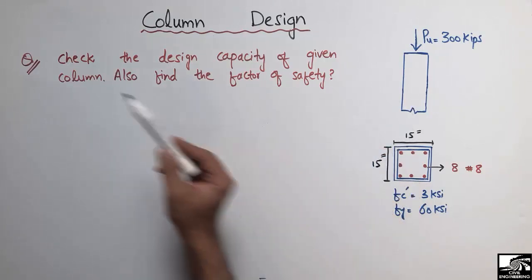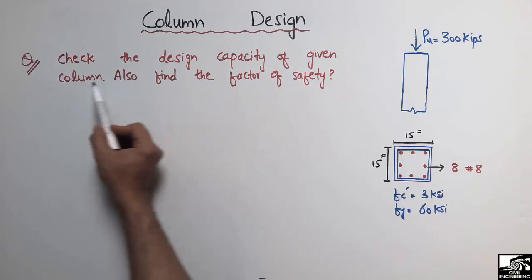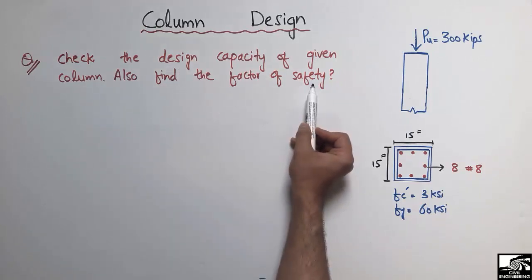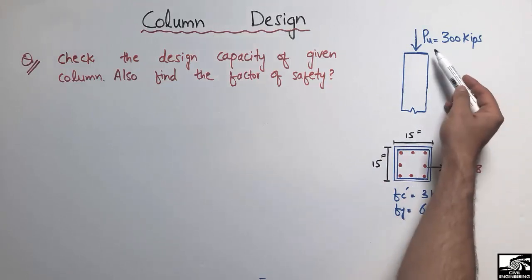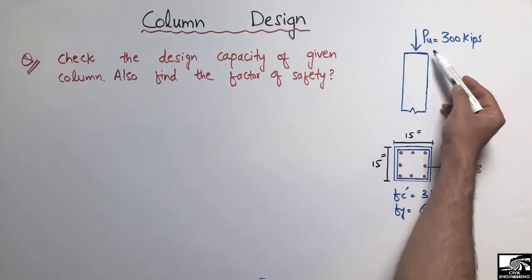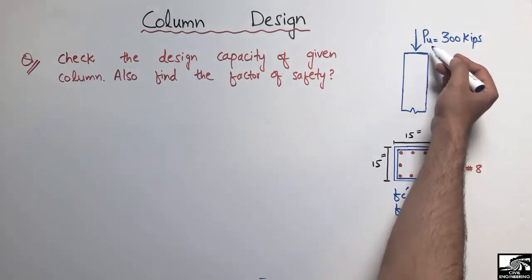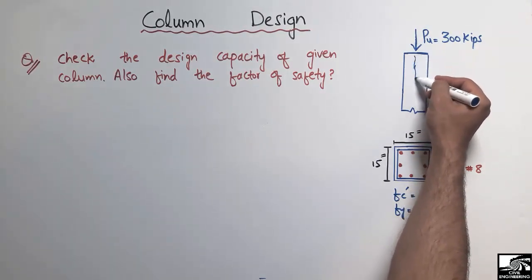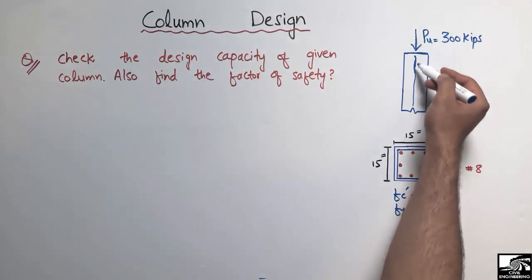The problem states: check the design capacity of a given column and also find the factor of safety. This column has a factored load of 300 kips acting on it, and you can see this column is axially loaded — the load is acting at the center of this column.